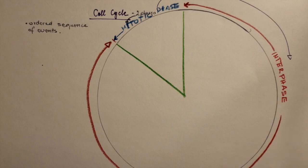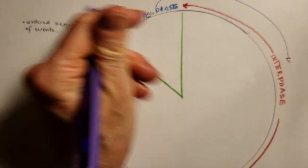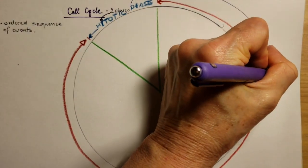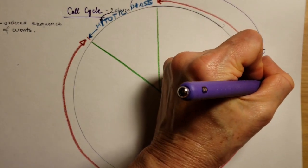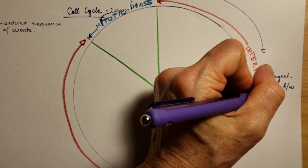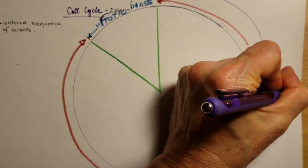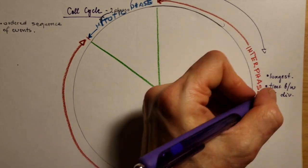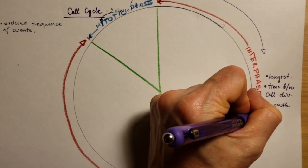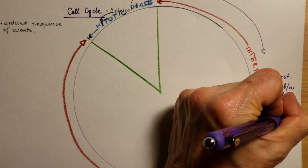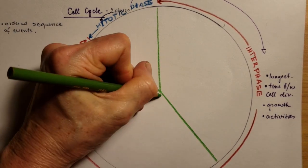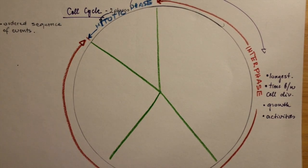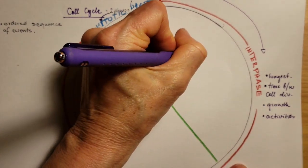The interphase, what happens in here? This is the longer phase and happens between cell divisions. During that activity the cell grows and does its activities. The interphase is divided up into three phases.